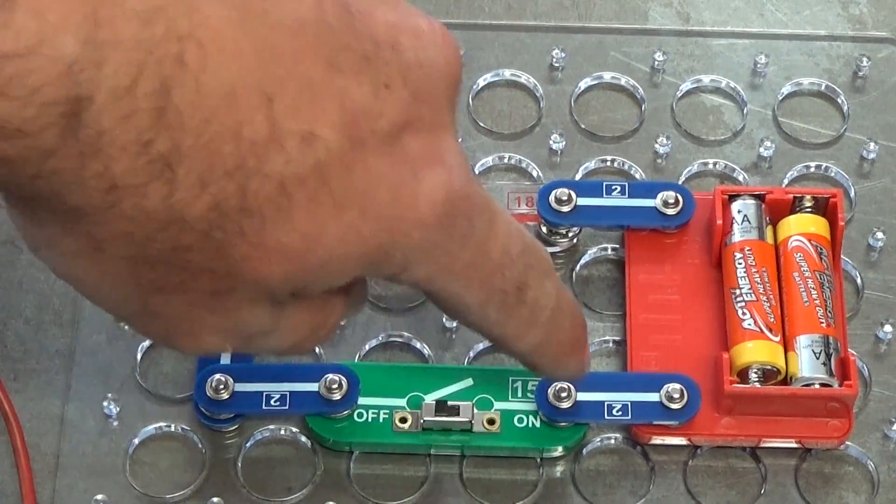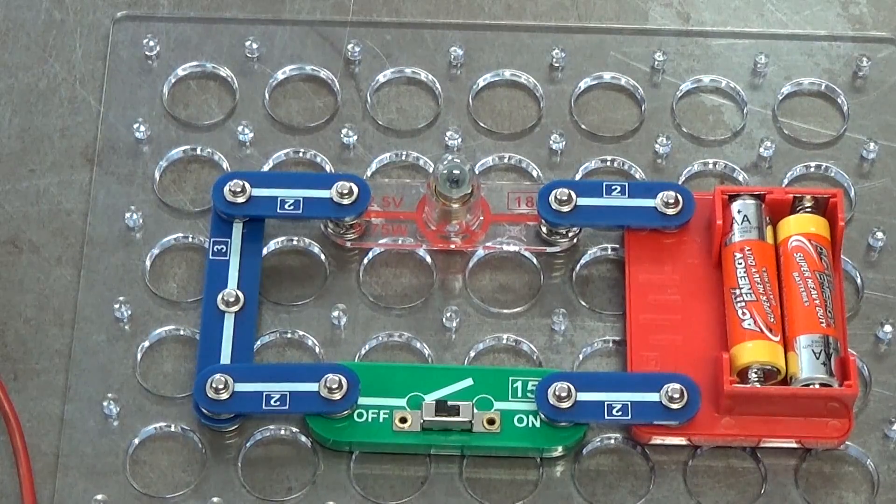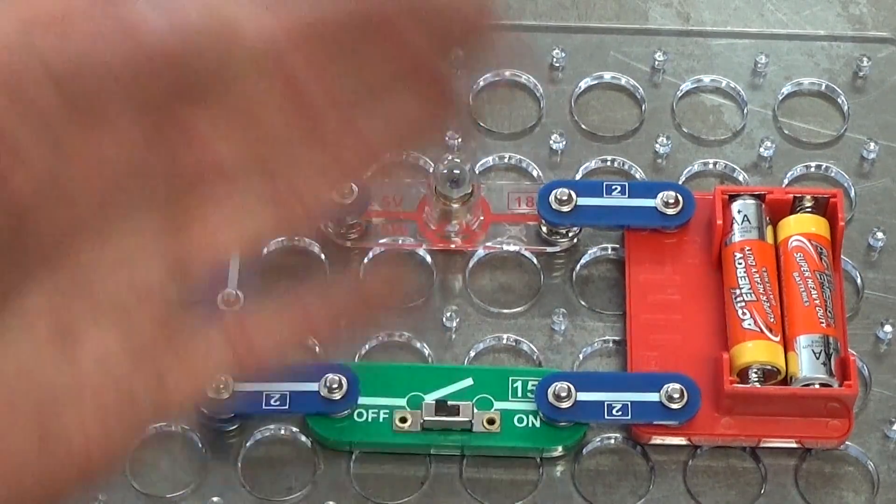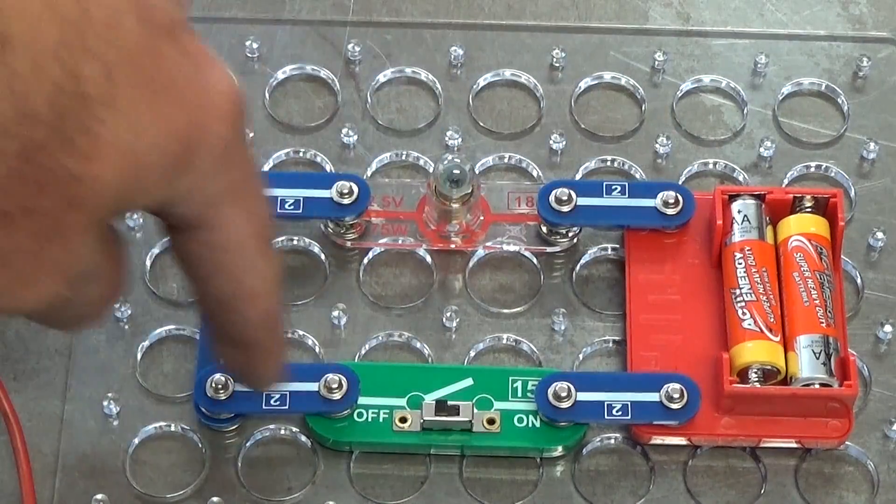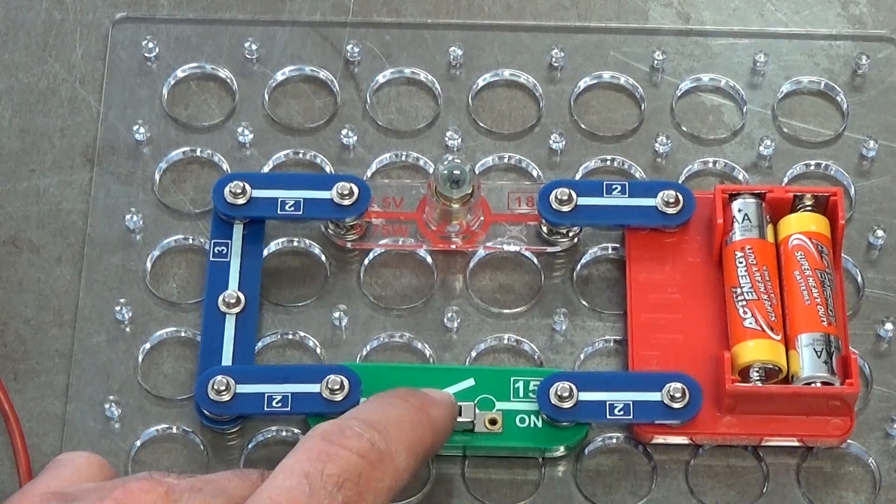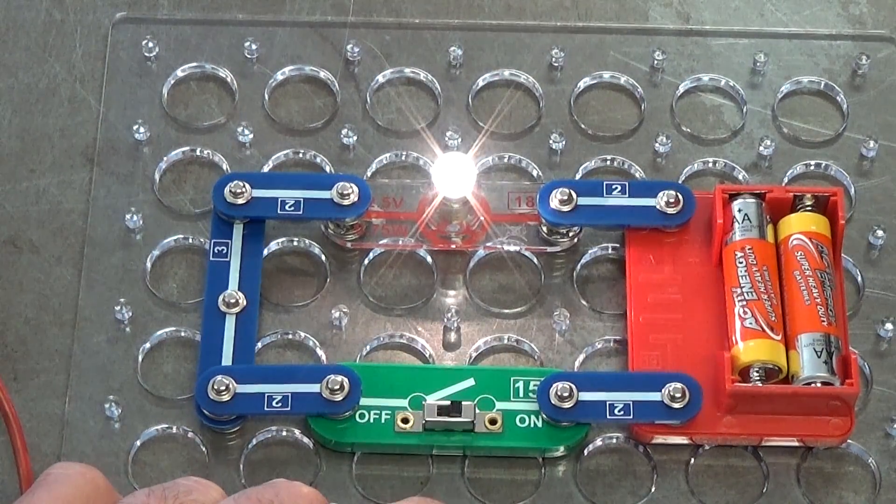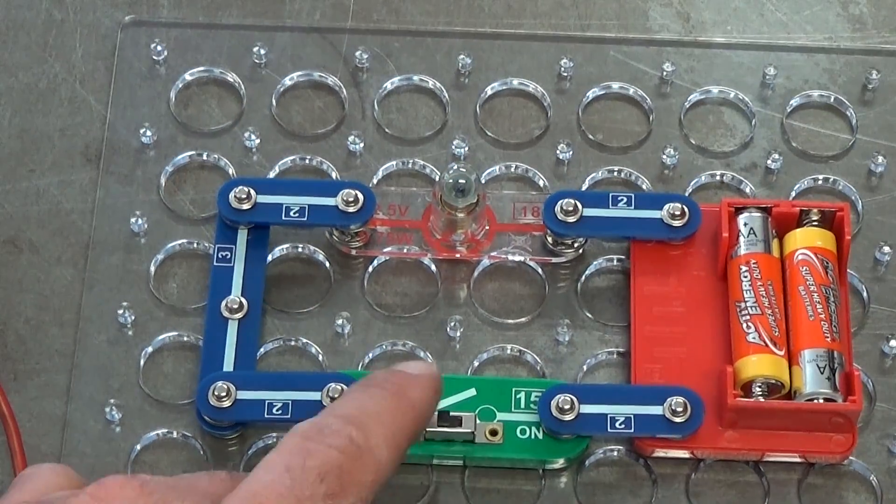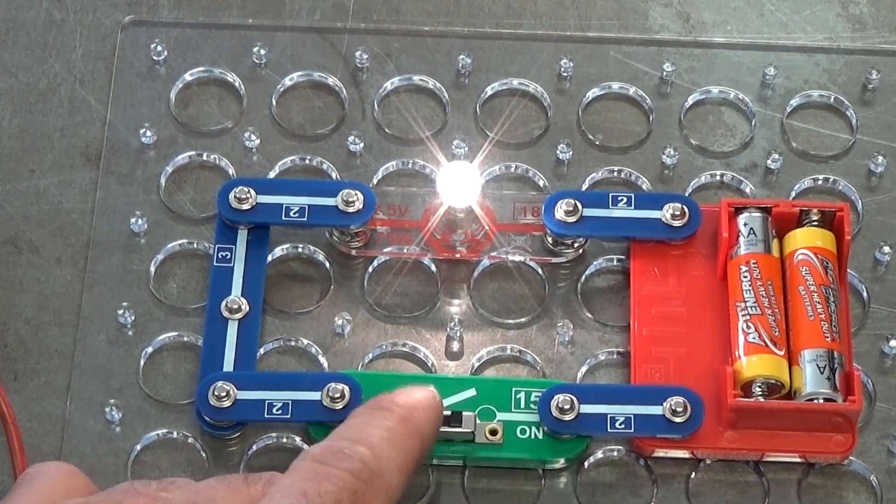Now the light globe hasn't lit up. Why not? Well, because the switch is off, right. So the circuit is open. There's no complete circuit all the way around here, so there's a break in the circuit, which is what the switch is here for. So as soon as we switch it on, we get a light.